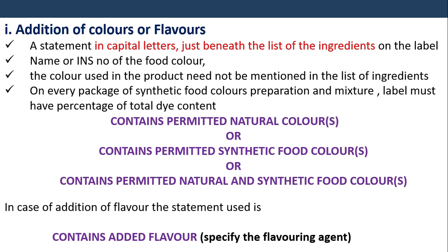The name or INS number of the food color used in the product need not be mentioned in the list of ingredients. On every package of synthetic food colors, preparations and mixtures, the label must have percentage of total dye content, and must state: 'Contains permitted natural colors,' 'Contains permitted synthetic food color,' or 'Contains permitted natural and synthetic food color.' In case of addition of flavor, the statement used is 'Contains added flavor,' and the specific flavoring agent should be mentioned.